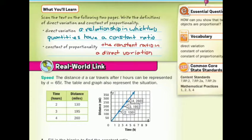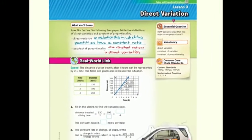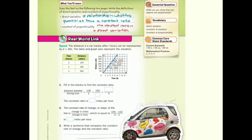Now, for our real-world link. The distance d a car travels after t hours can be represented by d equals 65 times t. The table and the graph also represent the situation. Two hours, 130 miles. Think about it: 65 times 2 is 130, 65 times 3 is 195, 65 times 4 is 260. And you can see that on the graph as well.